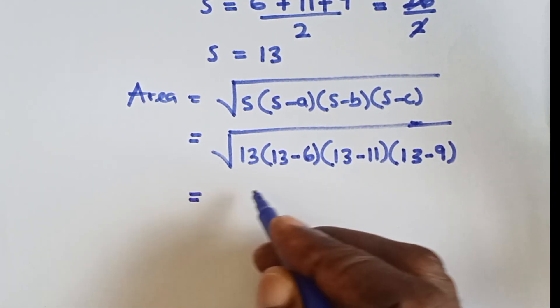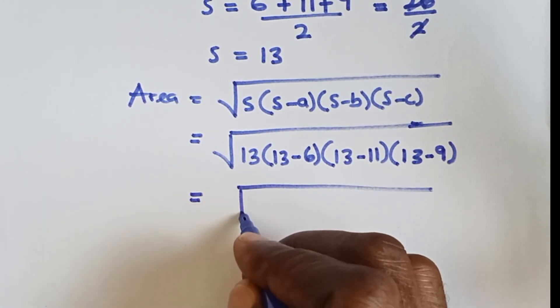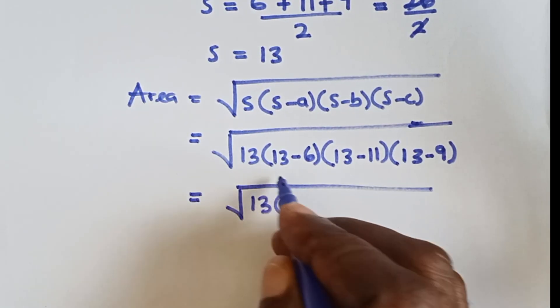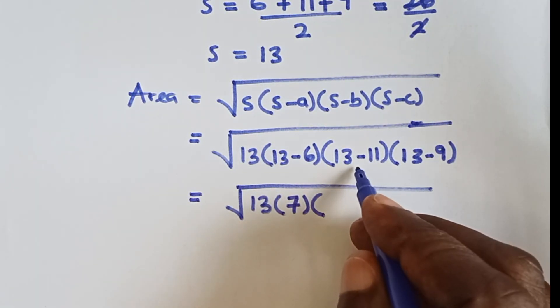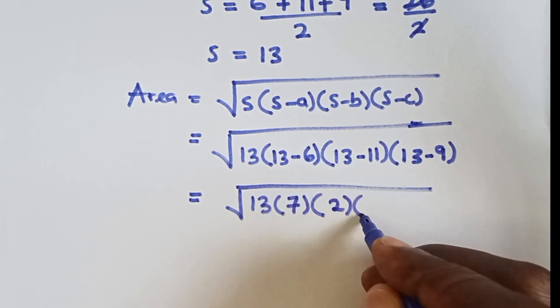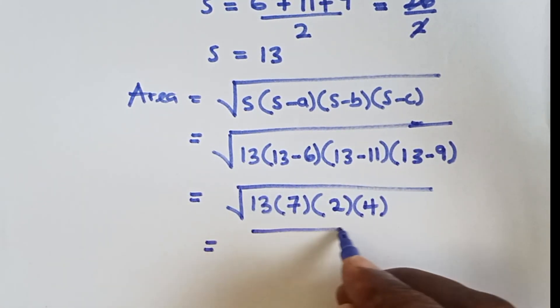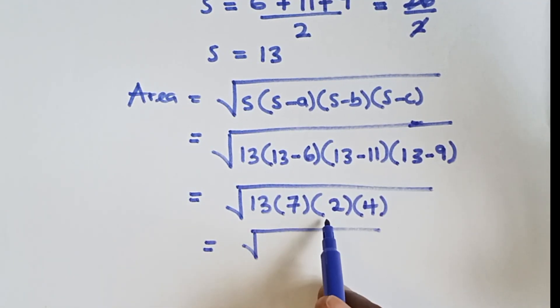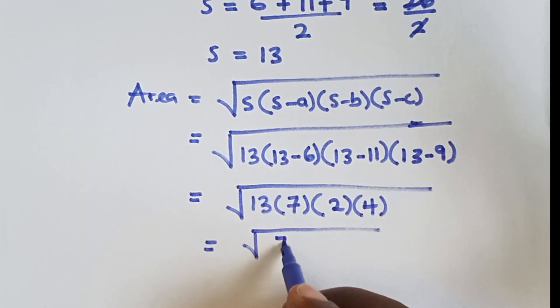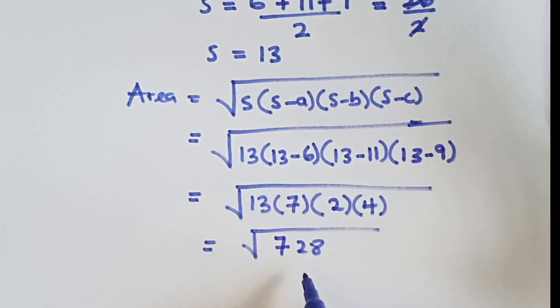So now we have square root of 13 - 13 minus 6 is 7, and 13 minus 11 is 2, 13 minus 9 is 4. Now we multiply all of this: 13 times 7 times 2 times 4 gives 728.